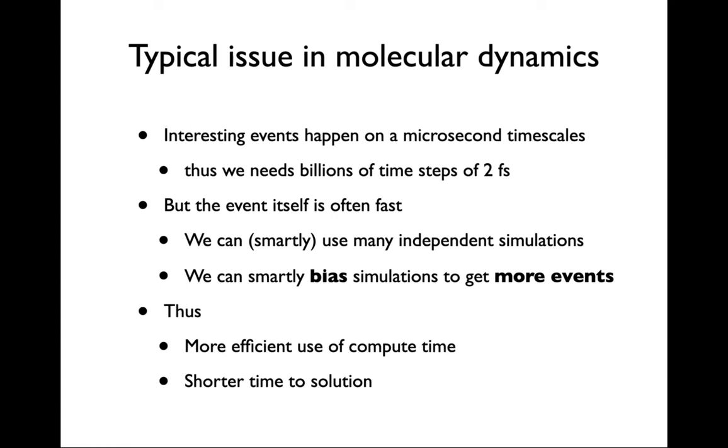When that's actually the case, then it is in principle possible to use many independent simulations because you can use a short simulation to sample a short event. If you can have some kind of control over where you sample and how you sample, you can smartly bias simulations to get more events. In that way, you can have more efficient use of compute time and shorter time to solution.